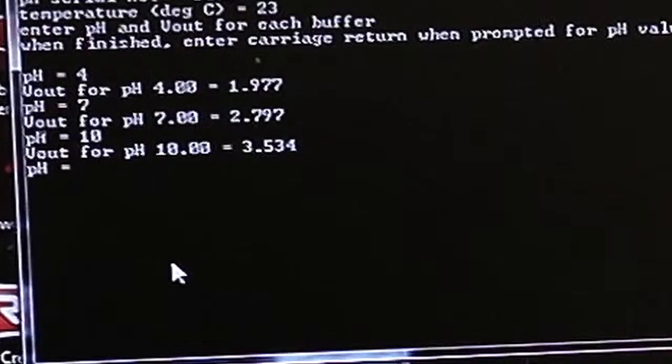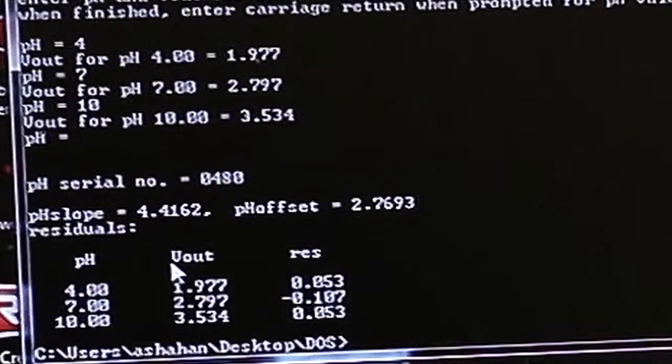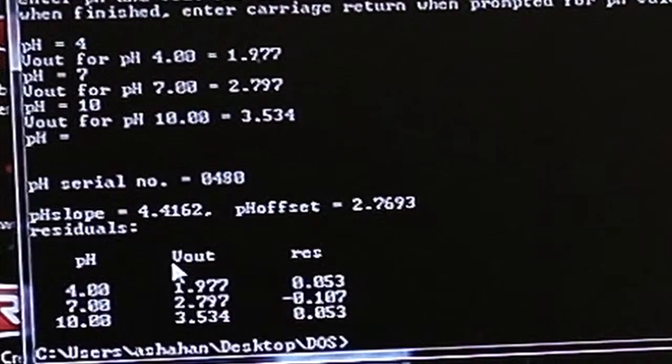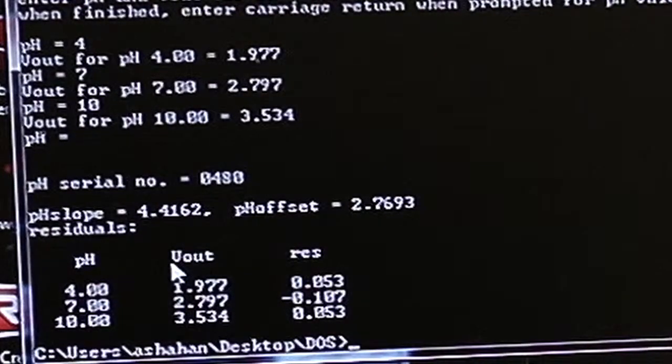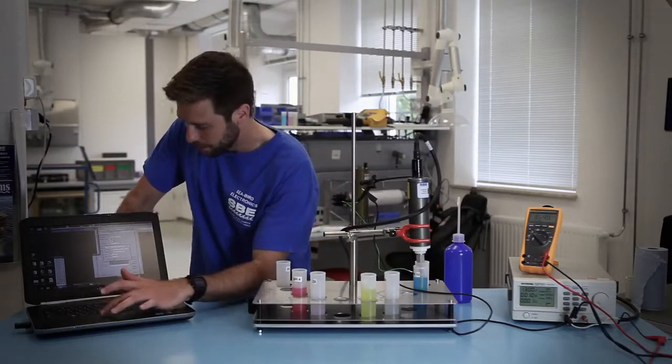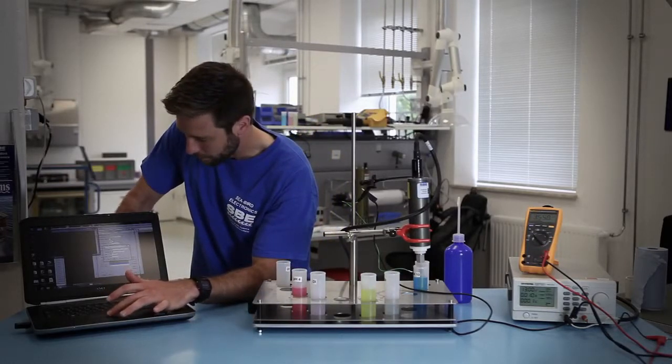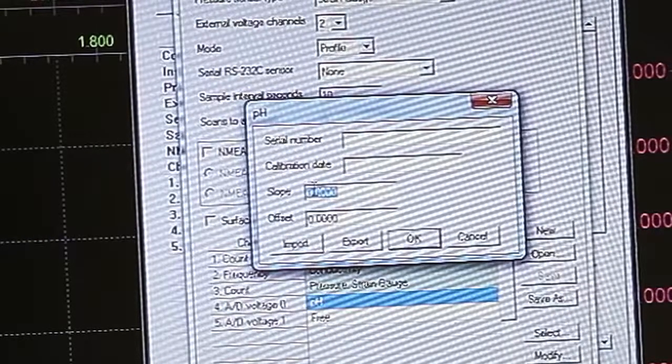Once you've entered in the last value you'll just hit enter again in the program and it will give you a Vout for each sensor for each solution. It'll also give you a new slope and pH offset that you will then use to enter into the instrument configuration file.